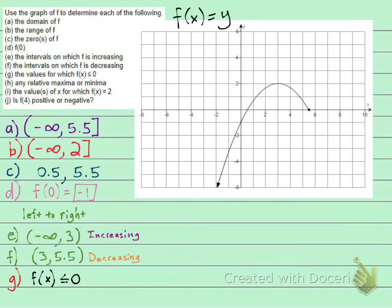What are the values for which this graph, the f of x, is less than or equal to 0? Remember that f of x is the same thing as y. So we're looking for y values.